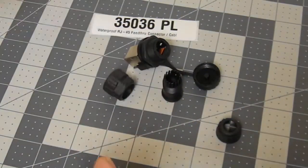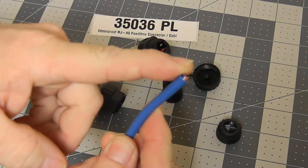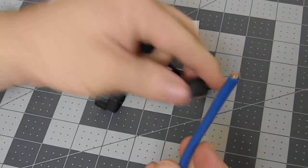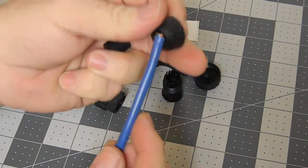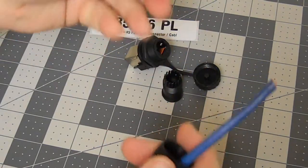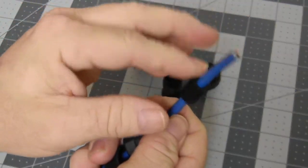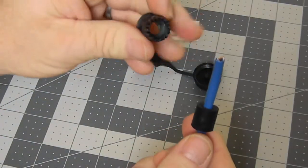Now to get it to the water rating, the IP67, you must start off with a plain cable with no connector on it. It must be applied later. That's the only way you could get the sealing grommet to slide over the cable.